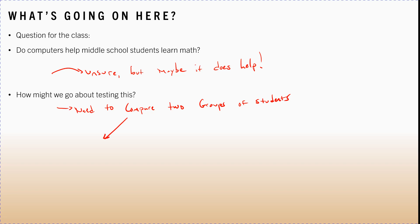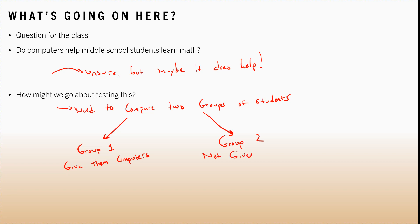You'd give group one computers for the year and go through teaching them the same basic math lessons, but they have access to computers in the classroom — they can look up supplemental material on the internet or use the built-in calculators. Then you'd have a second group of students and you won't give them computers. You'll give them the same lessons and they'll learn math the old-school way.